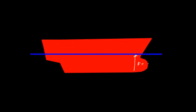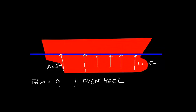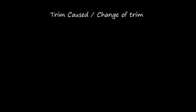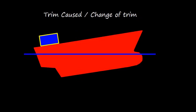Now let's take another scenario where the forward draft and aft draft are the same. Say the forward draft F is 5 meters and aft is also 5 meters — the draft throughout is the same. Here the trim is 0 and we can say that the ship is at even keel.